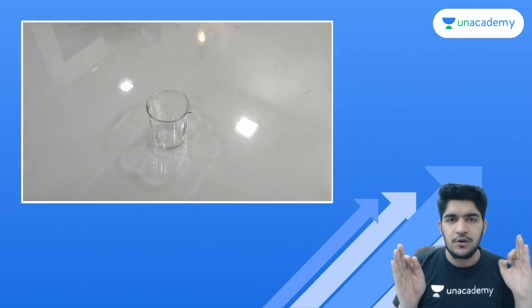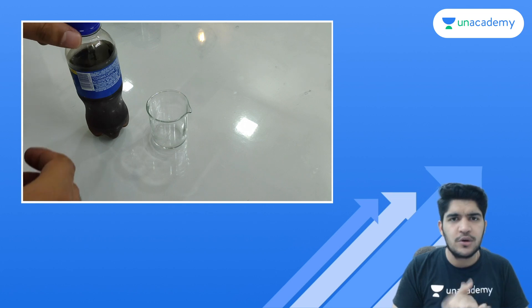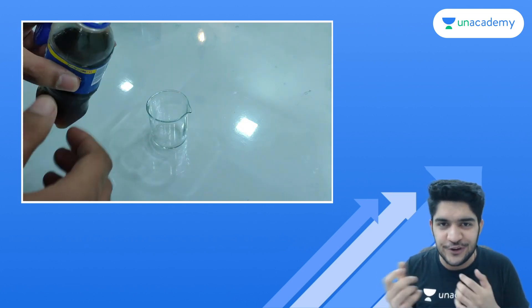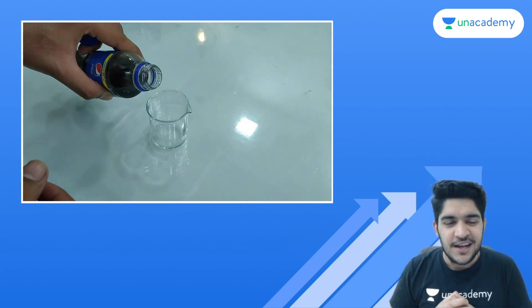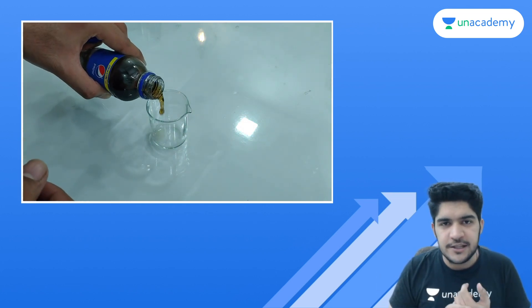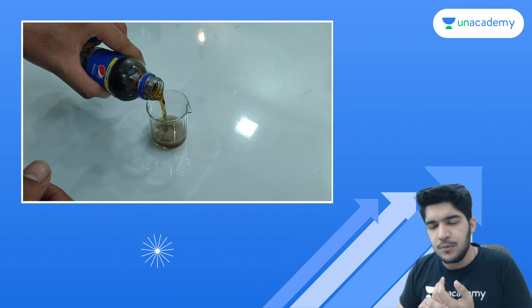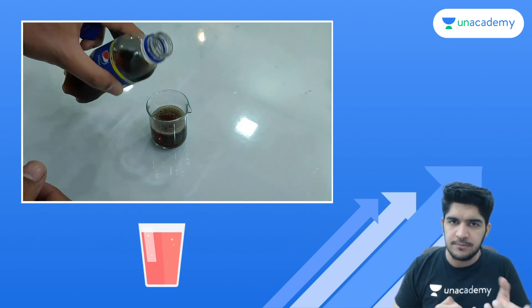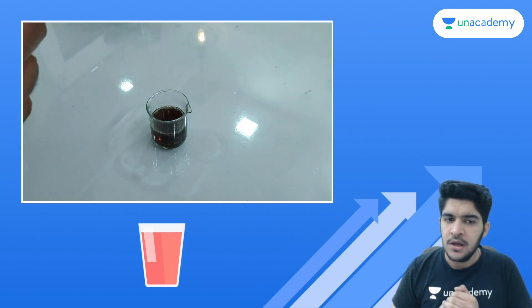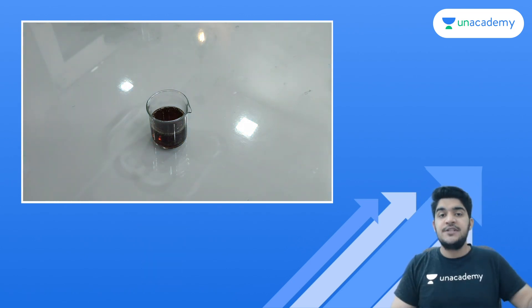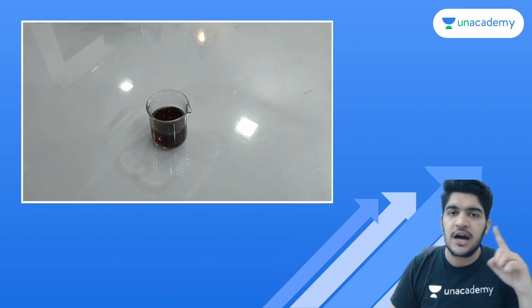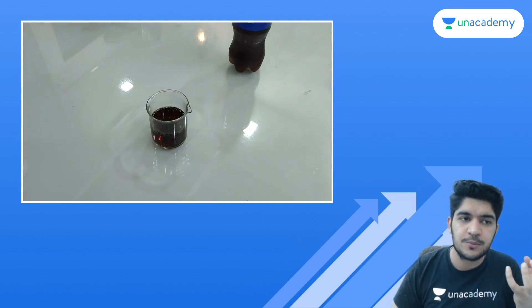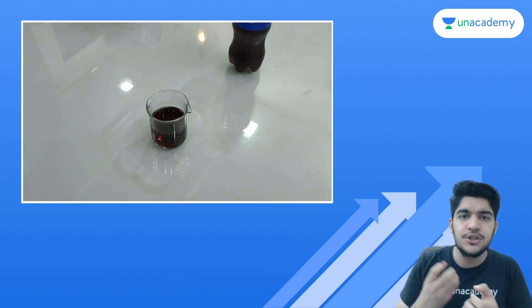So, pH of our cold drink — first of all, what are we going to do here? Obviously, we are going to pour cold drink in a beaker. We have almost 50 ml of cold drink. Now you know cold drinks are carbonated drinks. Look, they are carbonated — you get to see CO2 gas.